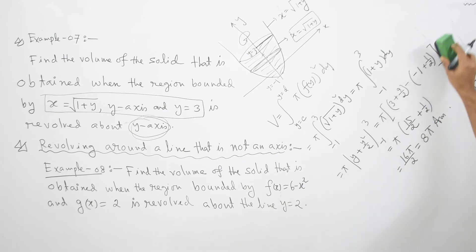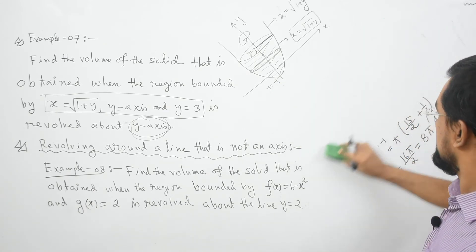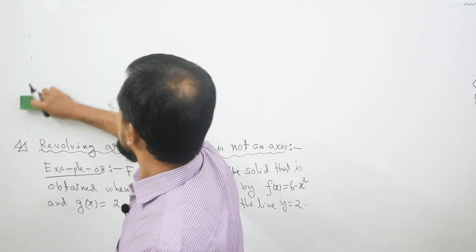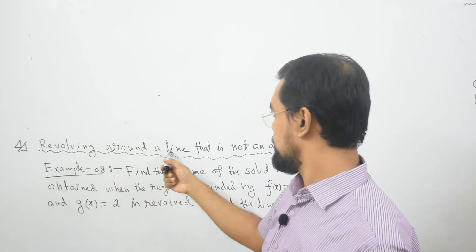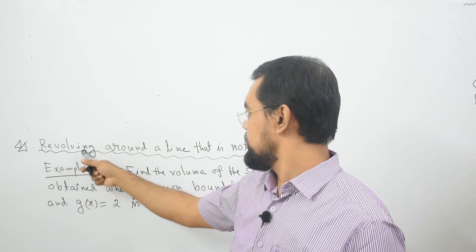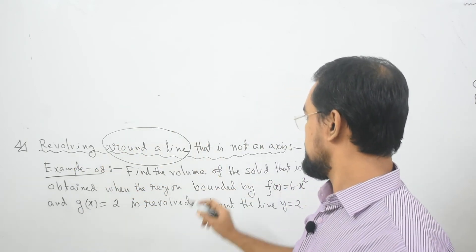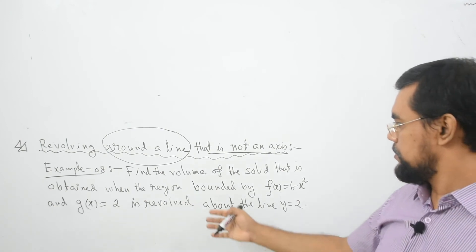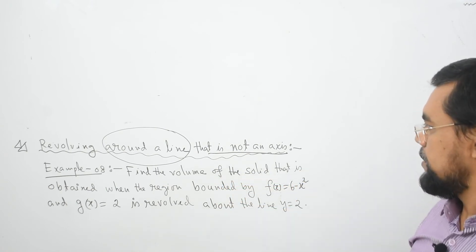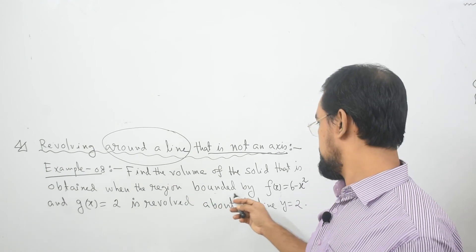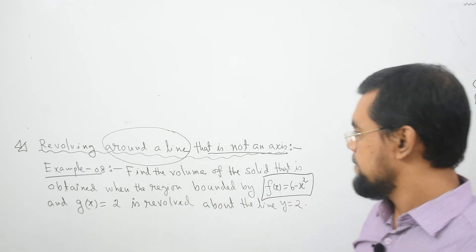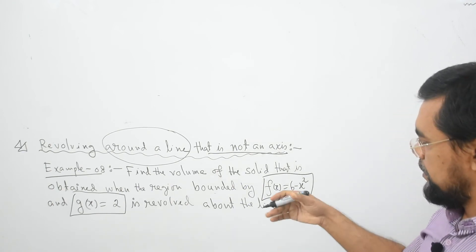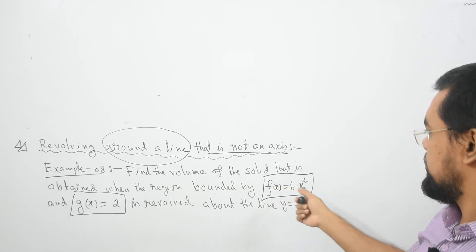And now let us try to understand example 8, which is a bit different from what we have discussed up to now. This one is related to revolving about a line — not an axis — that is not a coordinate axis. Find the volume of the solid that is obtained when the region bounded by f(x) equal to 6 minus x square and g(x) equal to 2 is revolved about the line y equal to 2.